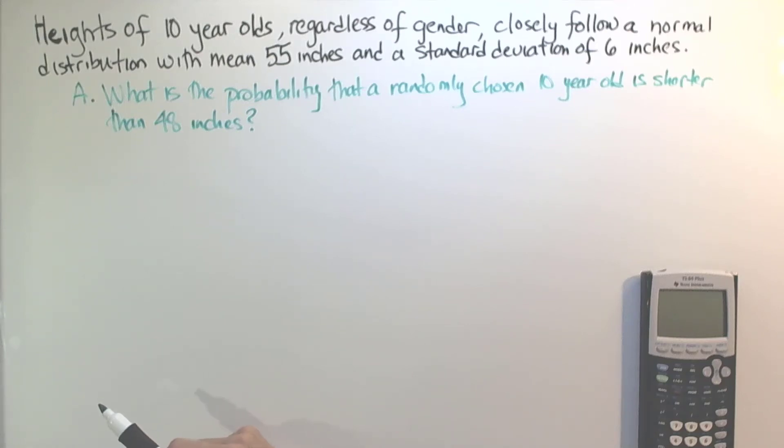In this video we're going to talk about some typical problems related to random variables. So to start, we'll look at this first problem.